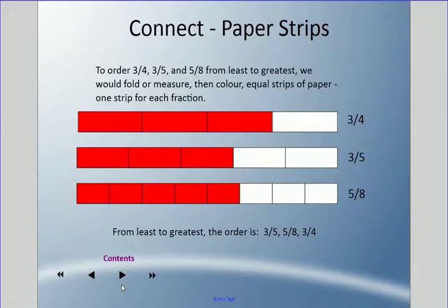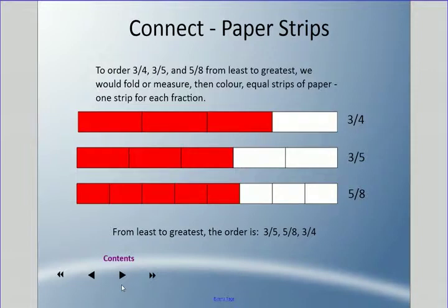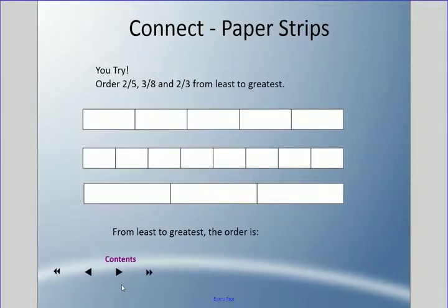Looking at the red, three fifths is indeed the smallest — it has not gone as far to the right. Five eighths is next, and then three quarters. Even though three quarters has the lowest digits, it's actually the biggest fraction. So from least to greatest: three fifths, five eighths, and three quarters. It's important to pay attention to what you're being asked to do.